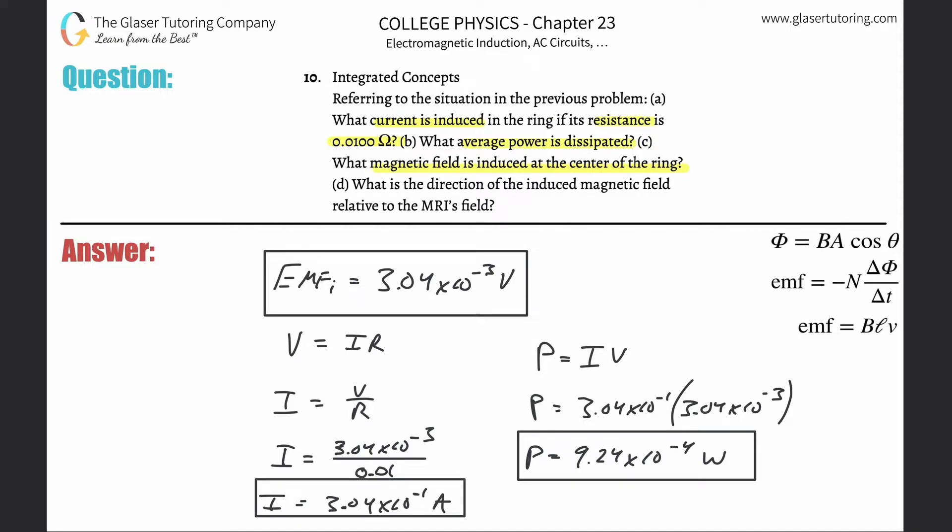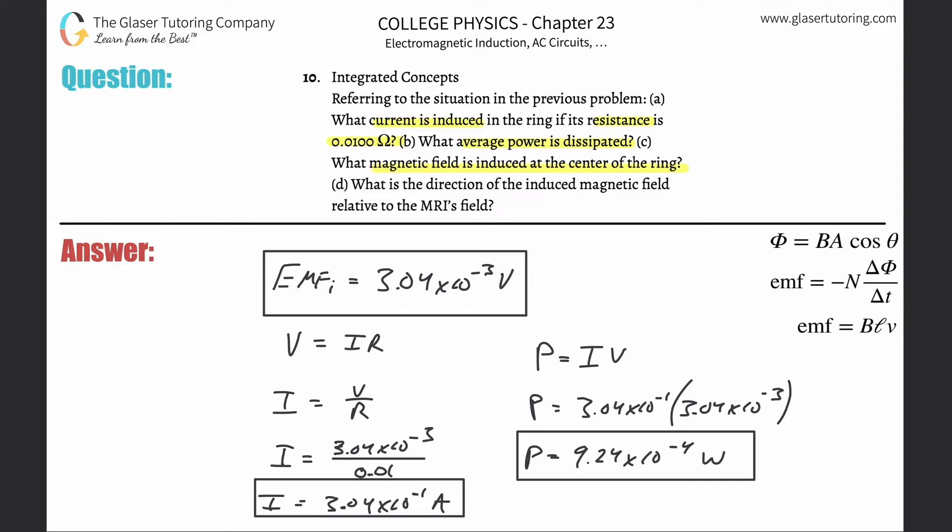Remember this particular formula: that the magnetic field at the center of a current-carrying loop will be equal to the permeability of free space multiplied by the current flowing through the loop, divided by 2 multiplied by the radius of the loop.